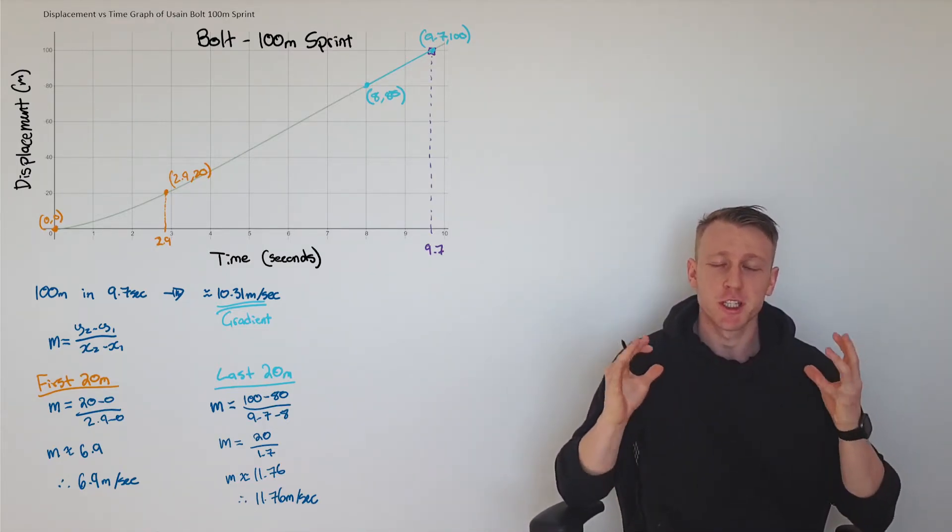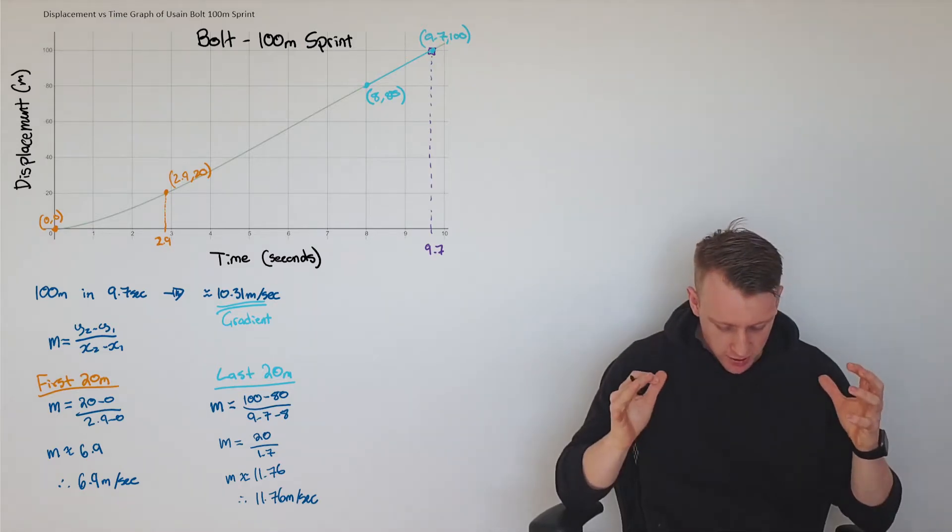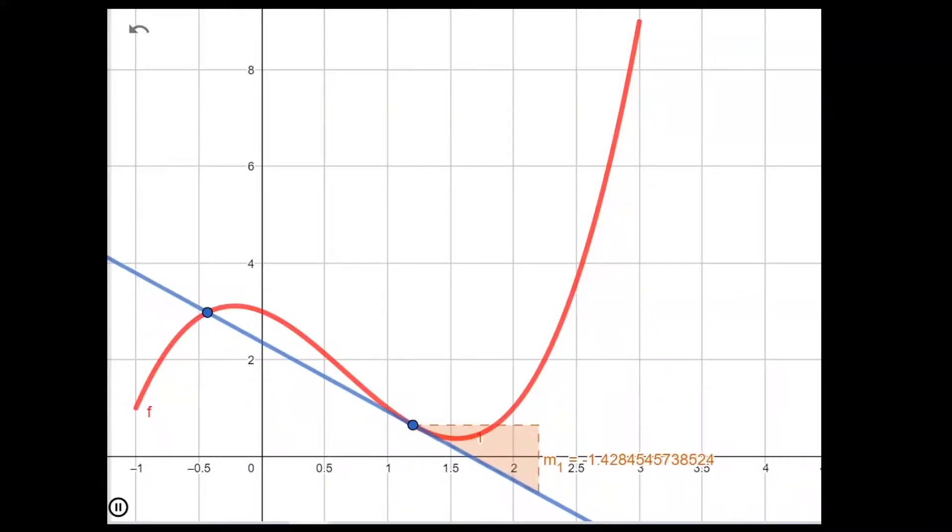Just to reiterate, these are the average speeds, the average speeds. Hopefully we can see that as two points are getting closer, the average speed is getting more accurate within a specific time period.